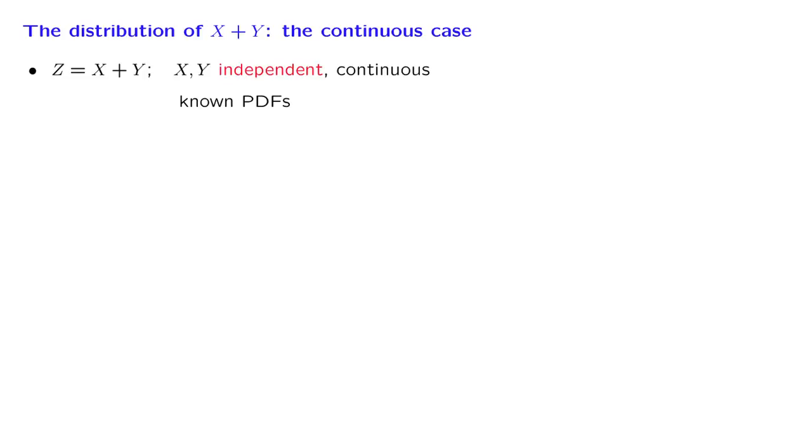We now develop a methodology for finding the PDF of the sum of two independent random variables when these random variables are continuous with known PDFs. In that case, Z will also be continuous, and so we'll have a PDF.